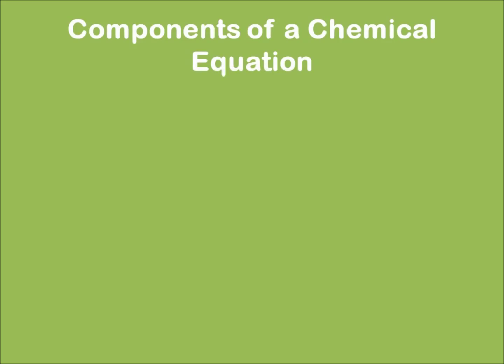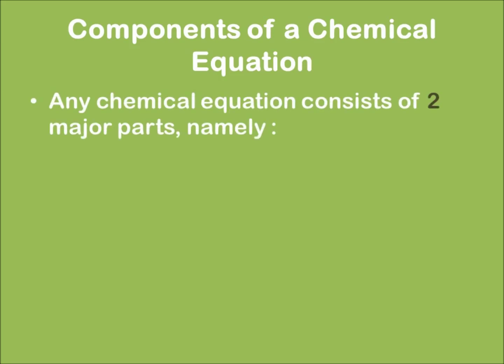The components of a chemical equation. There are mainly two major components in a chemical equation, namely the reactant and the other component is the product. Now let's define a reactant. A reactant is that substance which undergoes a chemical change during any chemical reaction.